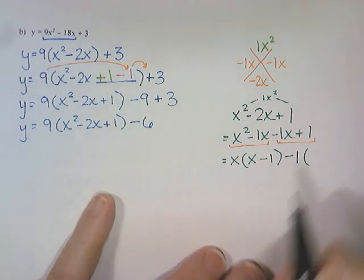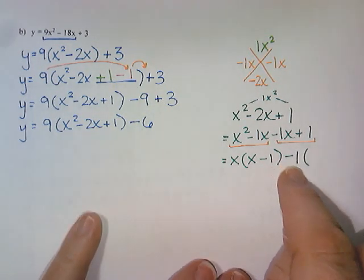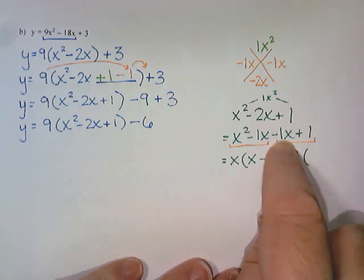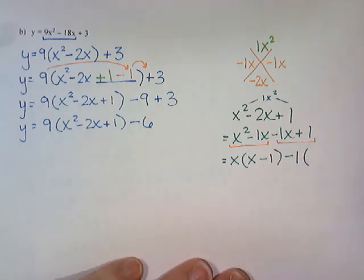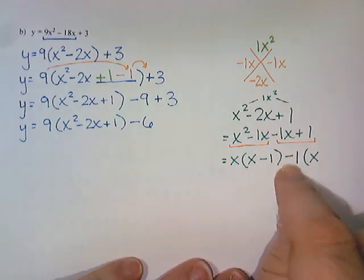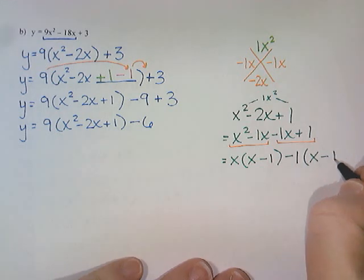And then -1x plus 1 don't really have anything in common, although they do both divide by 1. So I am going to say that they divide by 1. And we're not just dividing by 1. We are dividing by -1. So -1x divided by -1 is just 1x or x. And then 1 divided by -1 is -1.